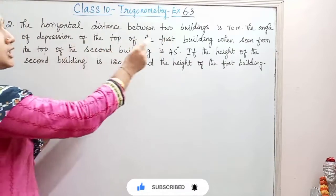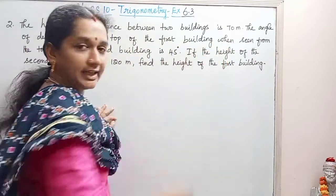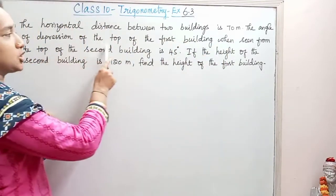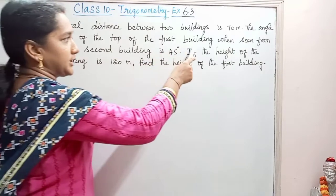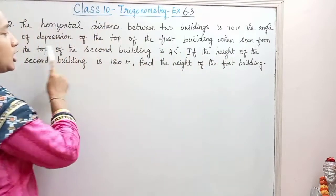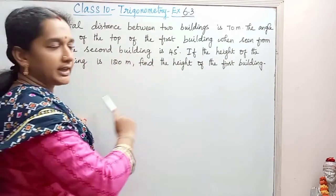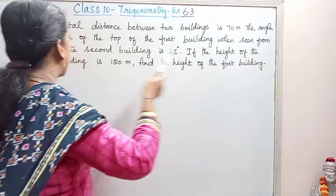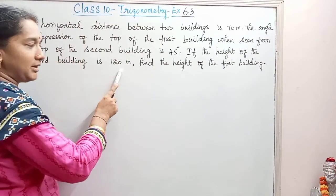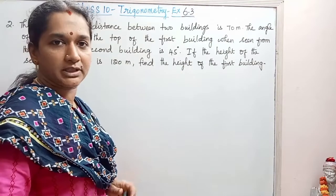The horizontal distance between two buildings is 70 meters. The angle of depression of the top of the first building, when seen from the top of the second building, is 45 degrees. If the height of the second building is 120 meters, find the height of the first building.